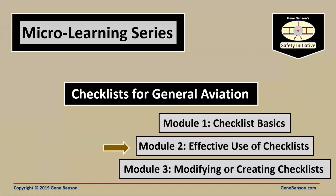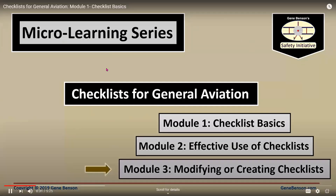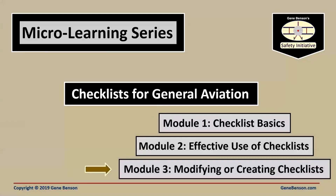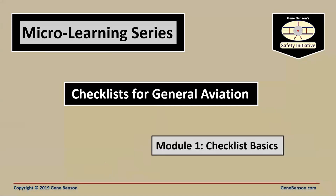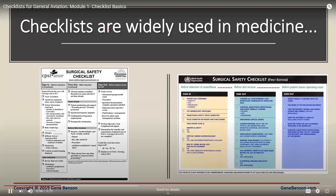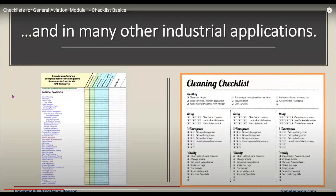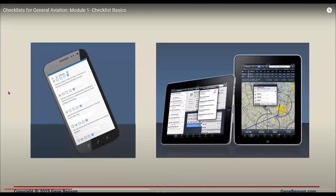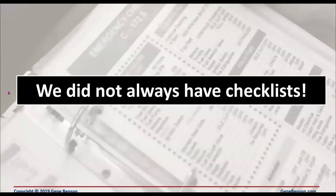Module two deals with the effective use of checklists — which checklists are needed and what to do if you are interrupted while running a checklist. Module three concerns modifying or creating checklists to make them right for the individual and the operation. I recommend you view the modules in sequence. So let's begin with a discussion of checklist basics. Today, checklists are used in many different industries for many different functions.